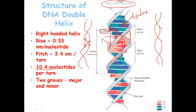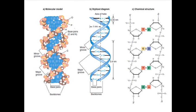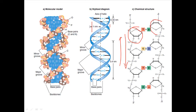This slide shows the molecular space-filling model, the stylized diagram, and the chemical structure diagram. It illustrates both the major and minor grooves and the complementary antiparallel nature of DNA — if one strand runs in one direction, the other must run in the opposite direction. Also, the oxygen on the sugar, which I call the head of the sugar, points upward on one strand.